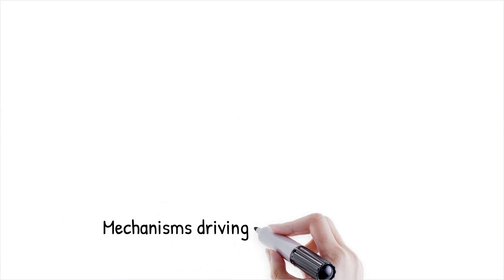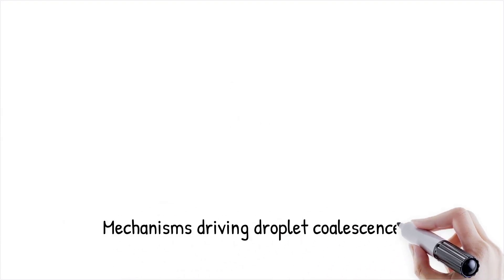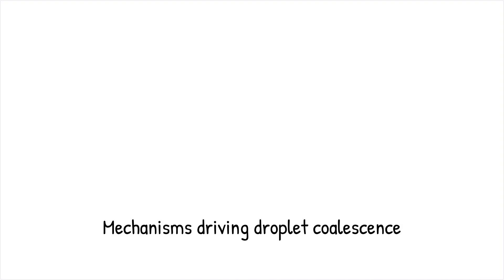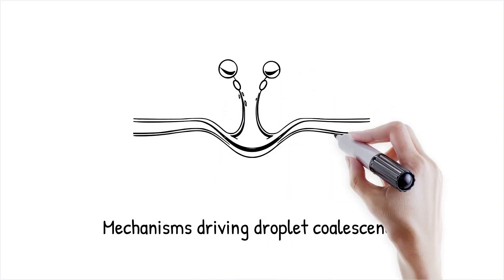The process begins when droplets come into close proximity, allowing their interfaces to interact. The thinning of the liquid film between the droplets is driven by external forces, such as flow-induced shear or electric fields, eventually causing the film to rupture and the droplets to merge. Microfluidic devices exploit coalescence using controlled flow patterns, such as in T-junctions or Y-shaped channels, to precisely manipulate droplet interactions.